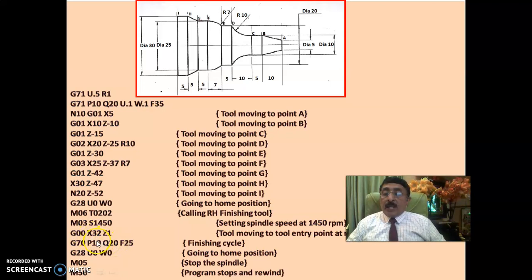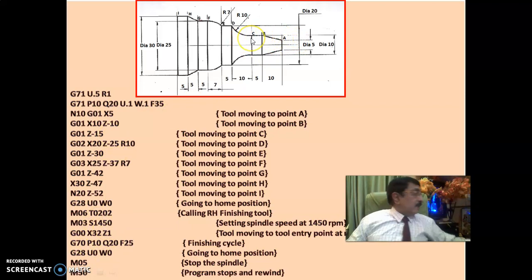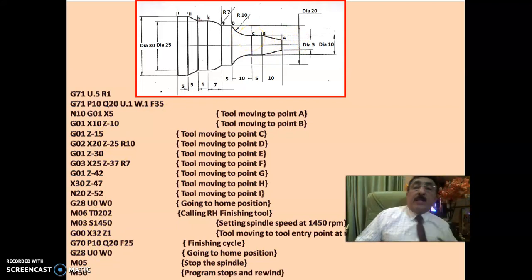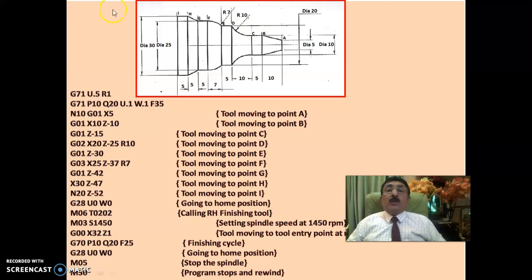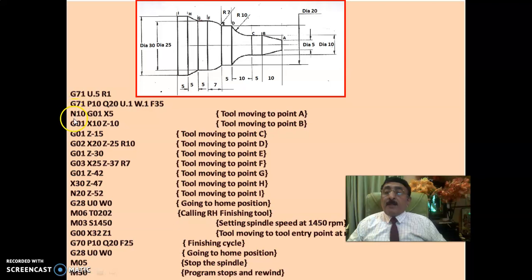After rough turning, the new finishing tool comes to the tool entry point X32 Z1. Then one command — G70 P10 Q20 F25 — performs finish turning between block numbers N10 and N20 at a feed of 25 mm/min. G70 is the finish turning cycle; it removes the 0.1 allowance left on both X and Z during rough turning.